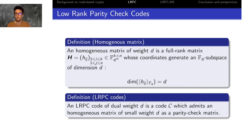And a low rank parity check code is a code who admits a parity check matrix which is a homogeneous matrix of a small weight D, where D is a small integer.